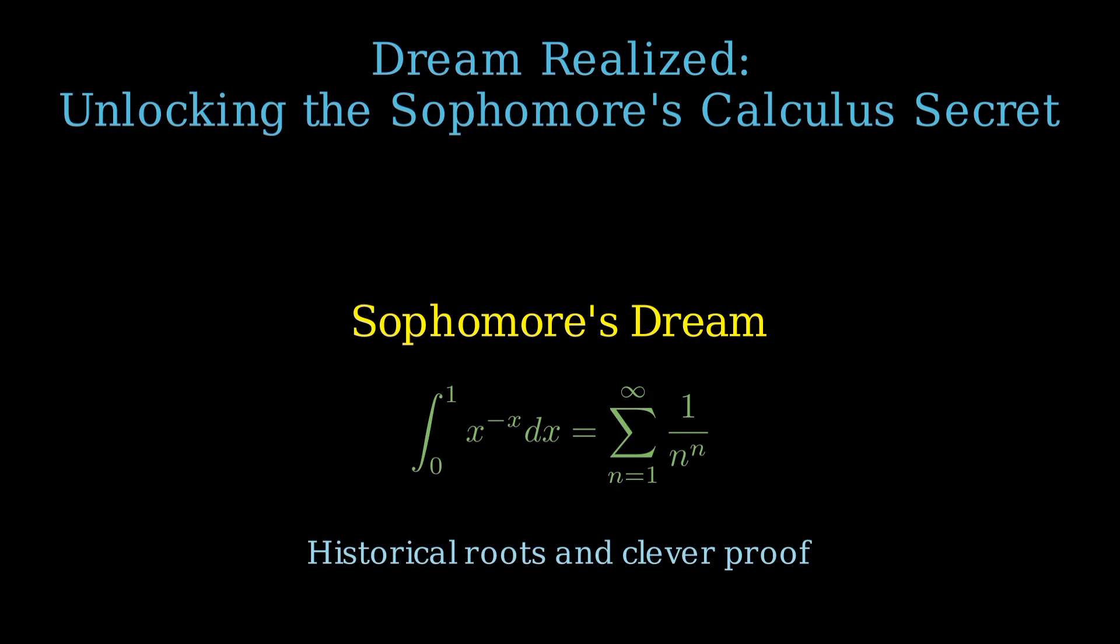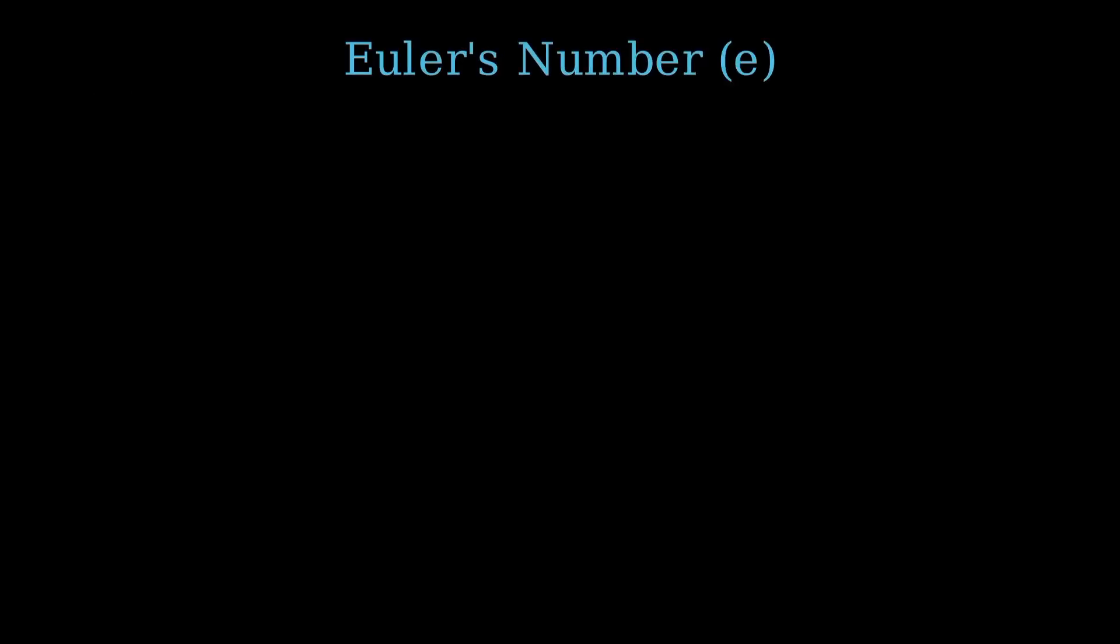We'll explore its historical roots and clever proof. Let's begin with a truly fundamental mathematical constant, Euler's number e. Approximately 2.71828, e is the base of natural logarithms and exponential functions.